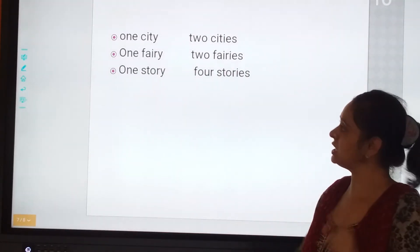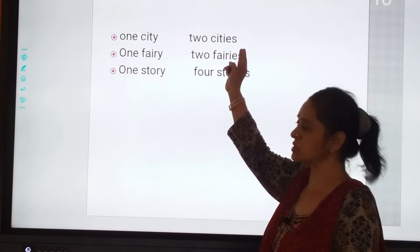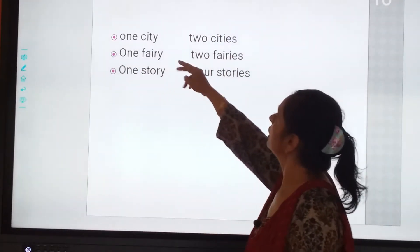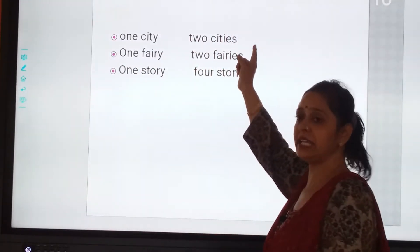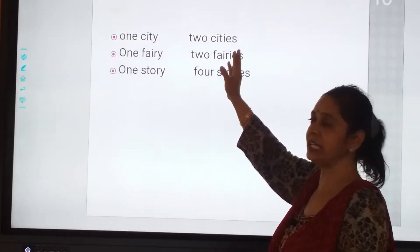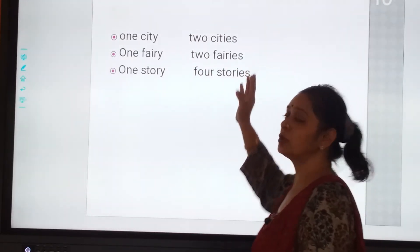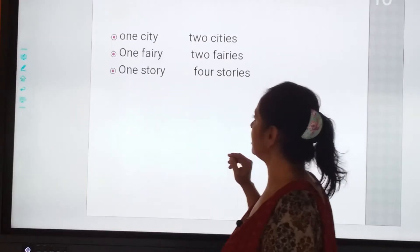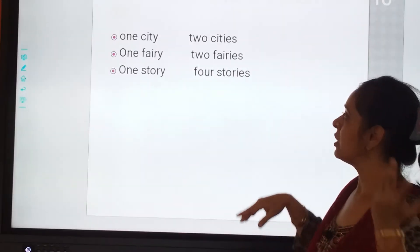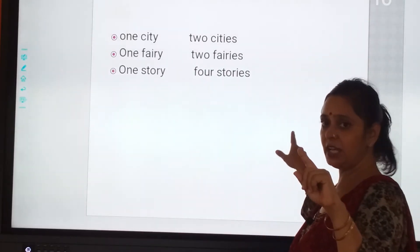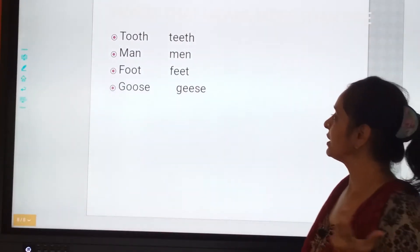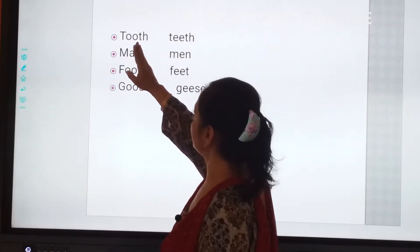If there is one city, two cities — we have changed Y to IES. Now change Y to IES for some of the naming words. One story, four stories. One fairy, two fairies or three fairies. Likewise, see.